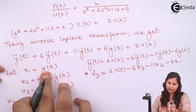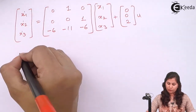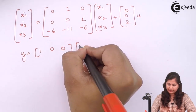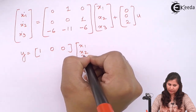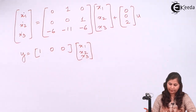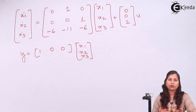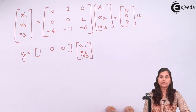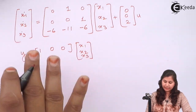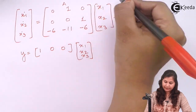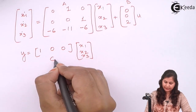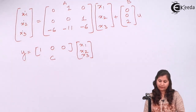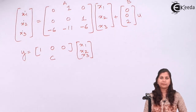The output equation is y = x1, so y = [1  0  0] · [x1  x2  x3]^T. This is the state model derived from the transfer function. In this state model, the A matrix is [[0,1,0],[0,0,1],[−6,−11,−6]], the B matrix is [0, 0, 2]^T, and the C matrix is [1, 0, 0].